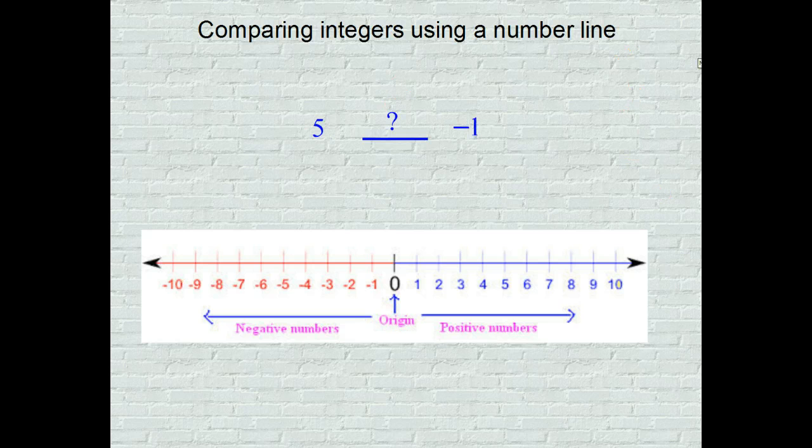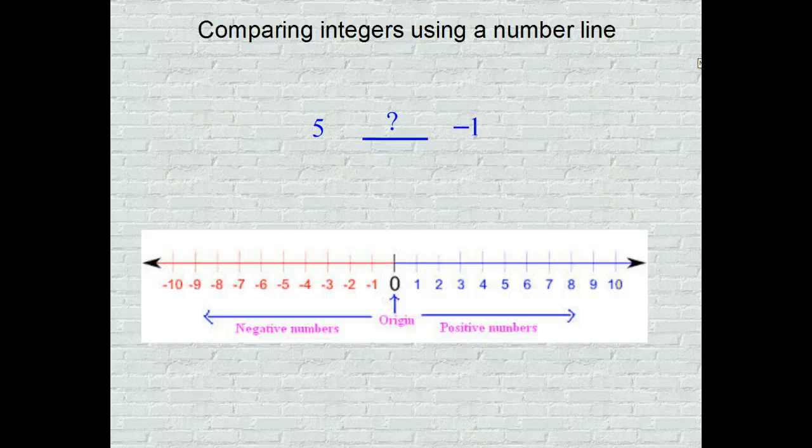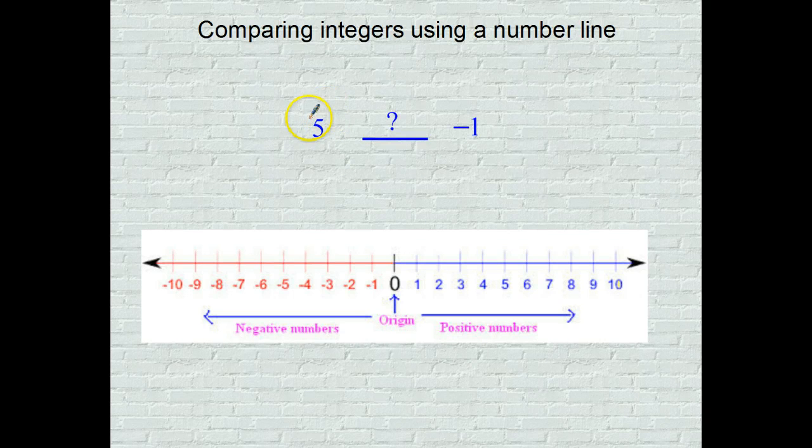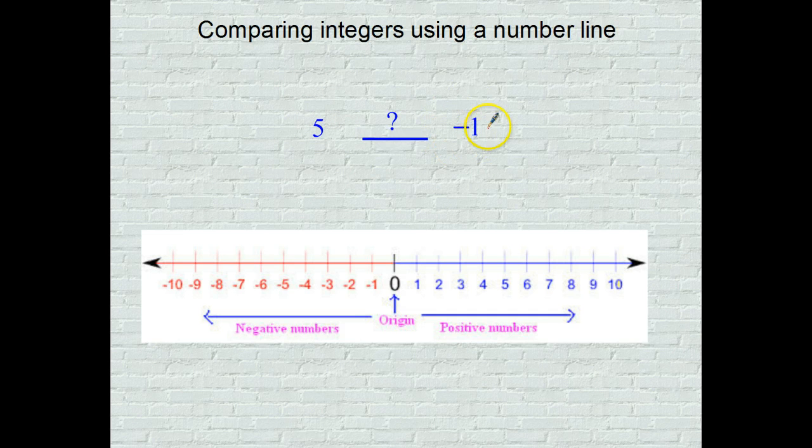How about five and negative one? Five is like saying $5. I have $5 in my pocket. My friend lost a dollar. So would you rather have $5 or lose a dollar? I would rather have $5. So five is greater than negative one.